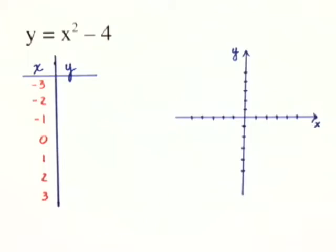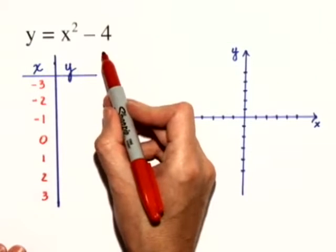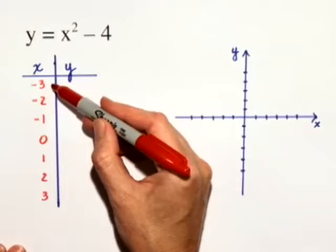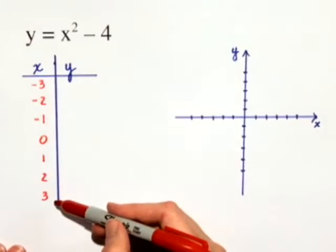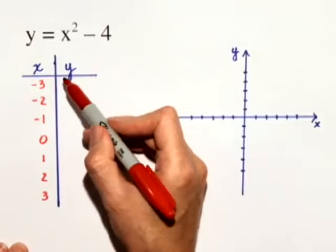Let's graph our next equation in the rectangular coordinate system. We have the equation y is equal to x squared minus 4. So we'll choose some values for x ranging from negative 3 to positive 3. We'll substitute the values into our equation.